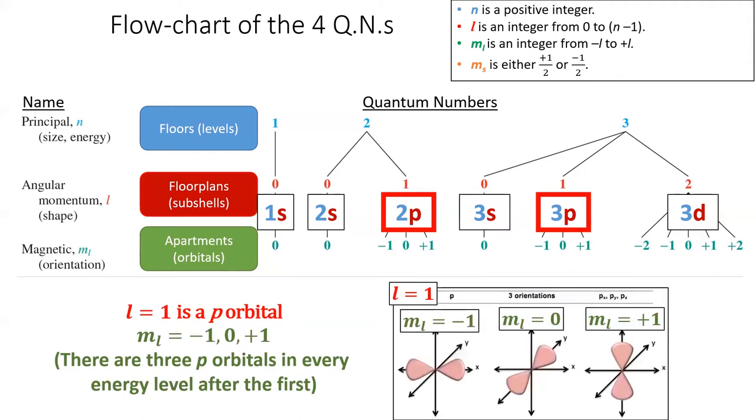Starting in the second energy level, l can equal one. When l equals one, we have a p orbital. Think p for power lifting these orbitals. These orbitals look like dumbbells. There are three orientations of p orbital, each corresponding to a different magnetic quantum number m sub l in green. The p orbitals in the second energy level are named 2p orbitals. The p orbitals in the third energy level are named 3p orbitals, and so on.